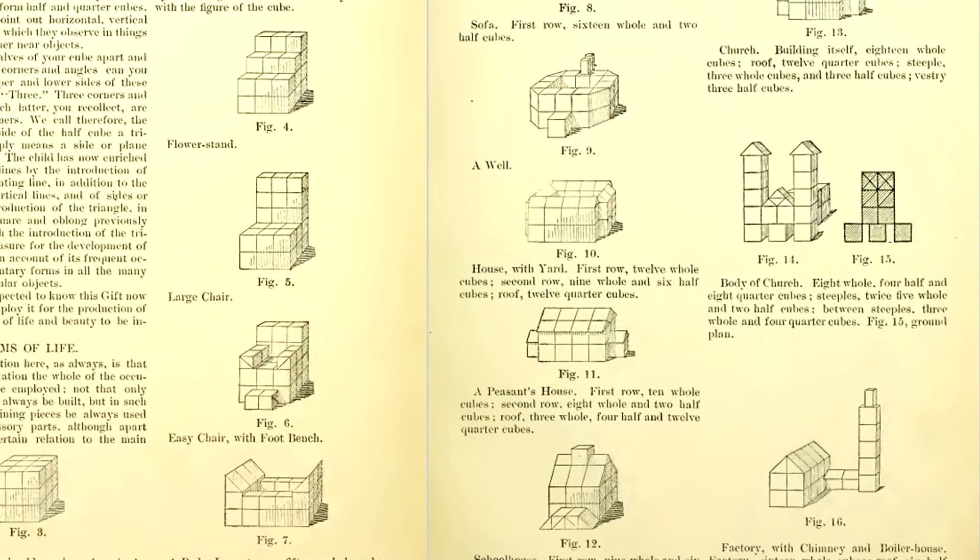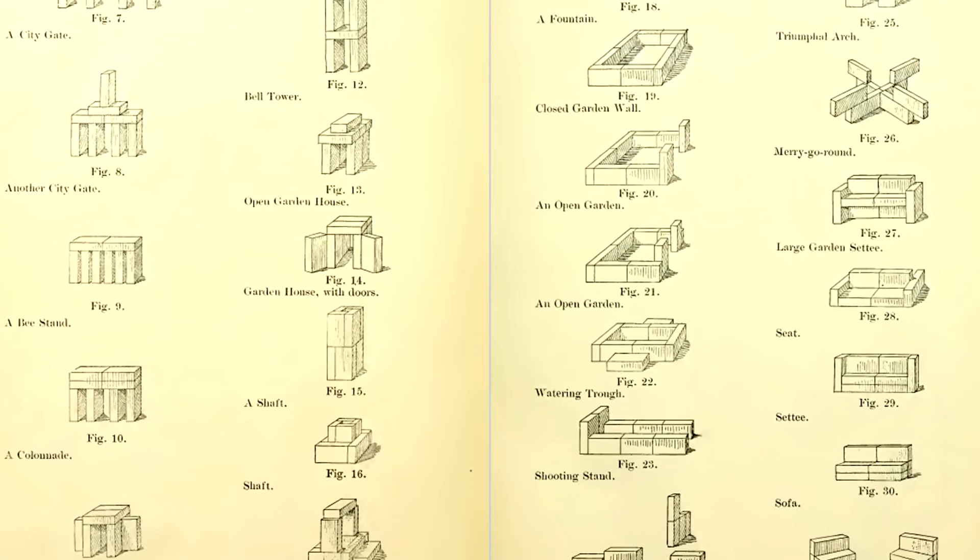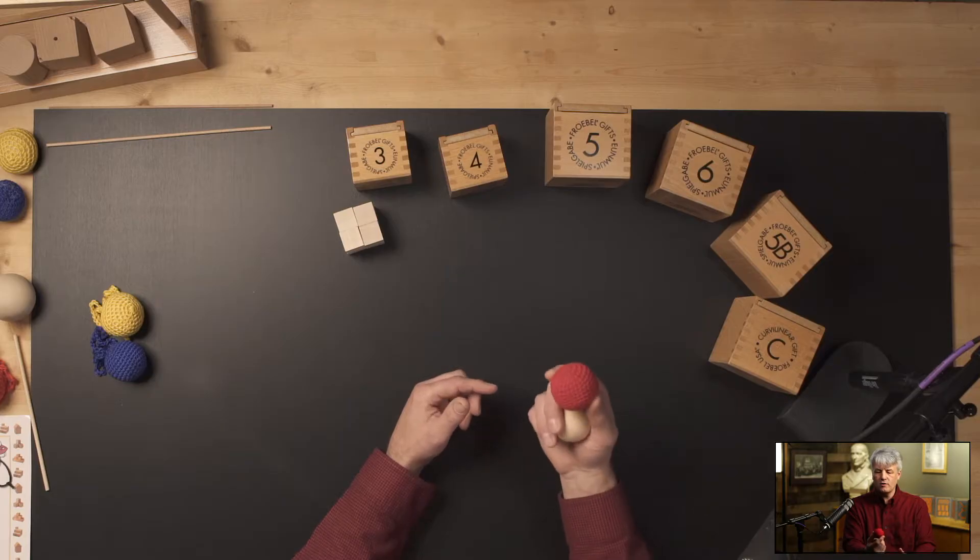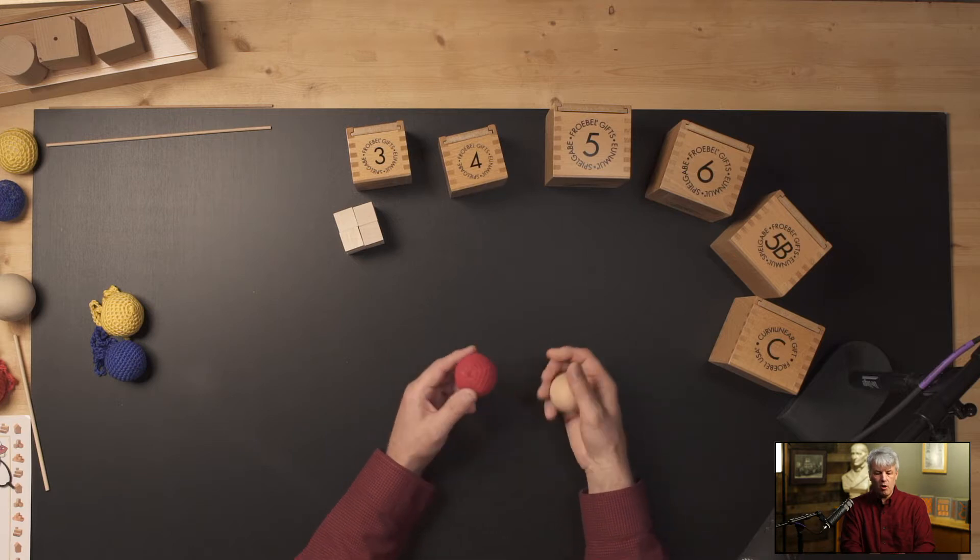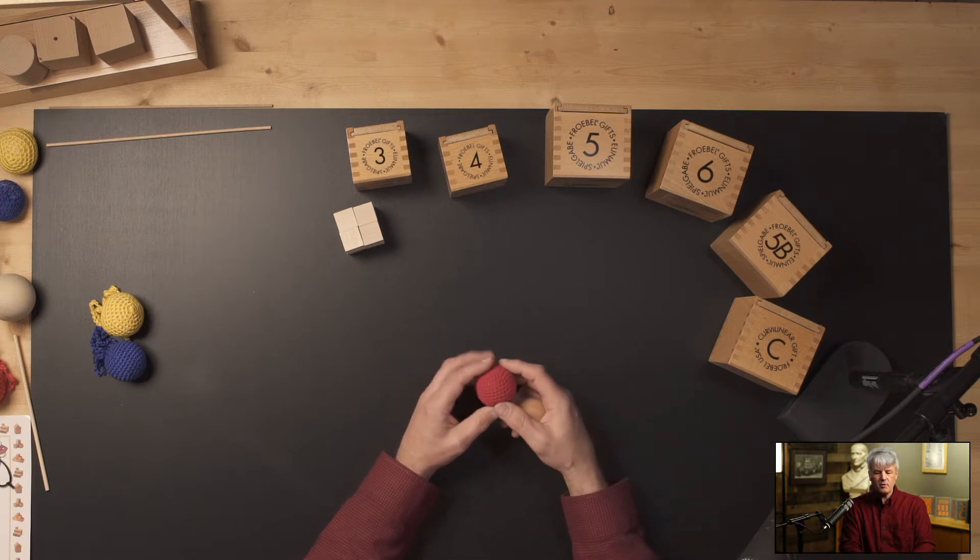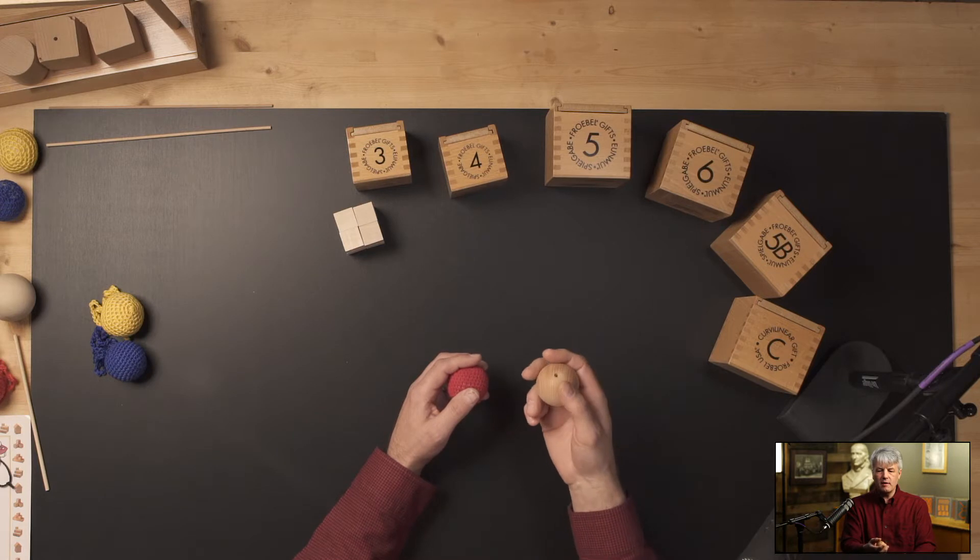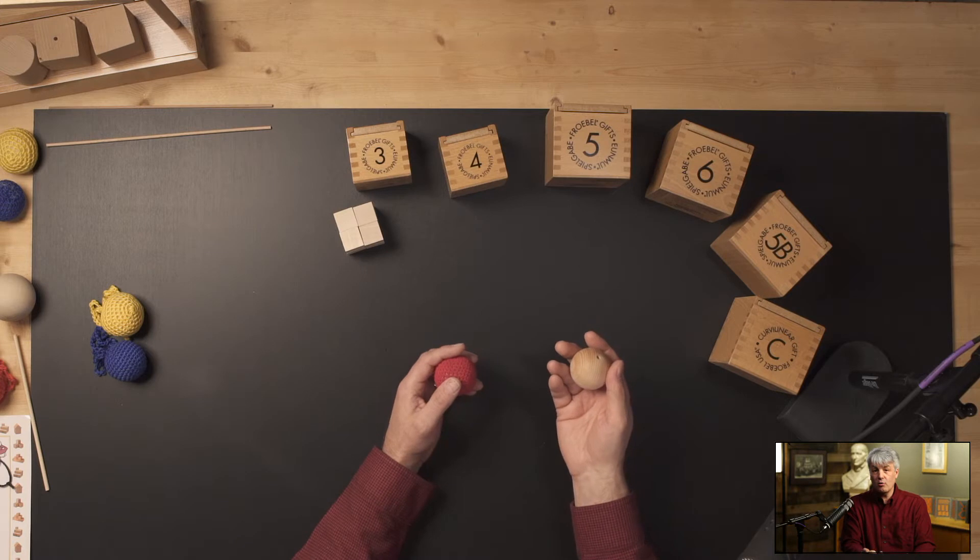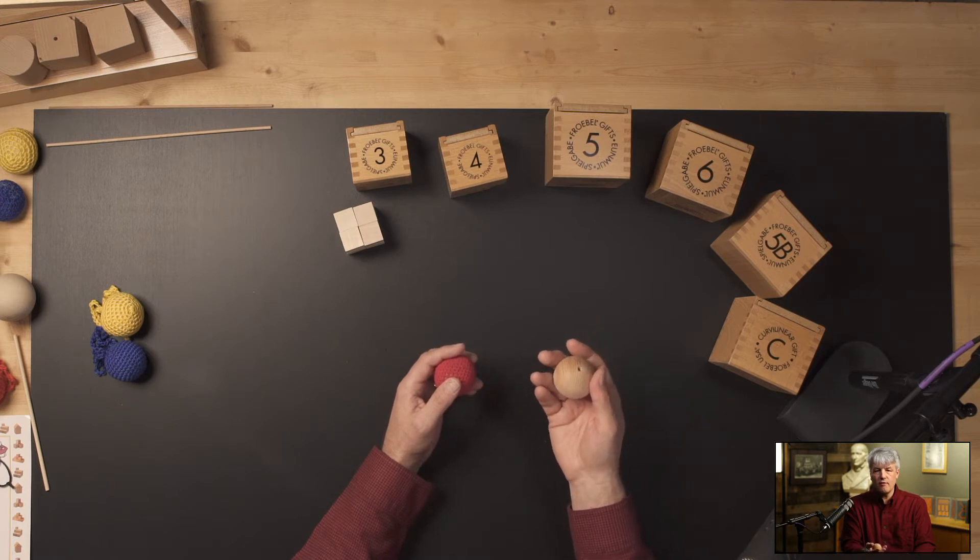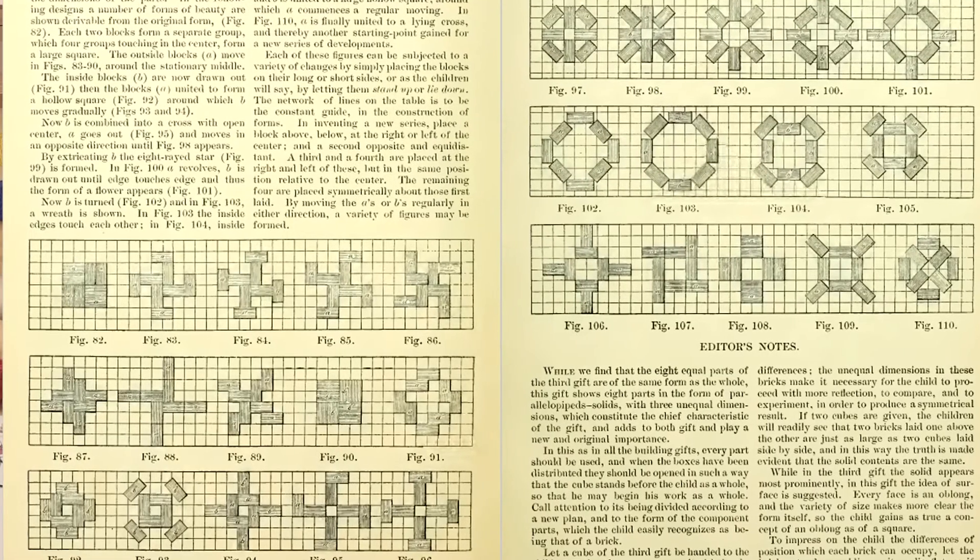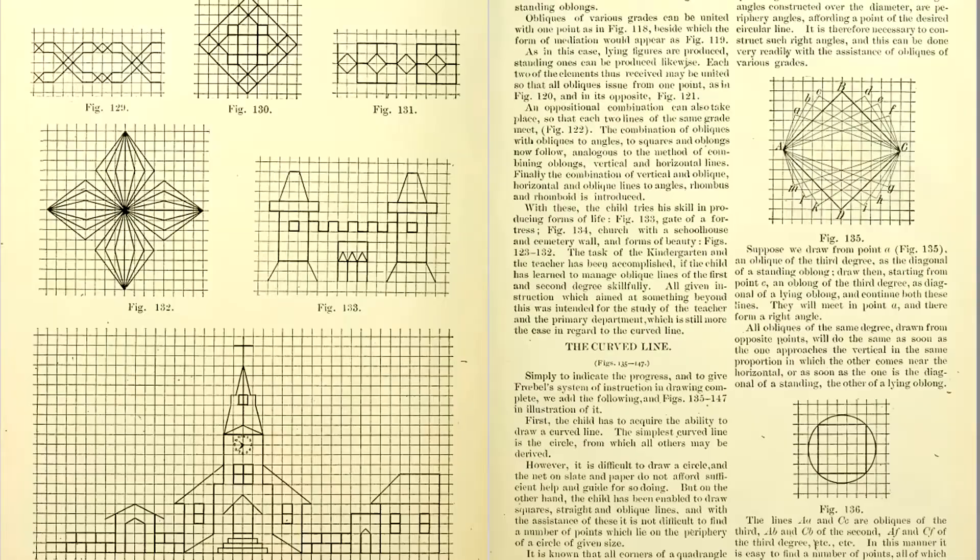One of the things that is so fascinating about Froebel was he put a lot of time into thinking how children play and he developed an idea that there's really only three things that you can do with these materials and he called them forms: forms of life, forms of knowledge, and forms of beauty. Forms of life are representing things that a child knows. Forms of knowledge are what is the name of this, this is a sphere, how many do I have. And then the third was forms of beauty which would be abstract patterning, symmetrical patterning.